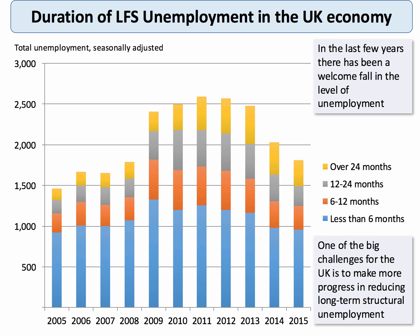A really key aspect of unemployment is not just how many people are out of work but for how long. We need to think about the duration or length of unemployment. You can see that the blue area is the most frequent — there are about a million people in the UK in 2015 who've been unemployed for less than six months. But a substantial number, albeit falling, have been out of work for at least six months, sometimes more than a year, and in some cases more than two years. These people are known as the long-term unemployed, and one of the big policy challenges in Britain is to make significant progress in cutting that level.